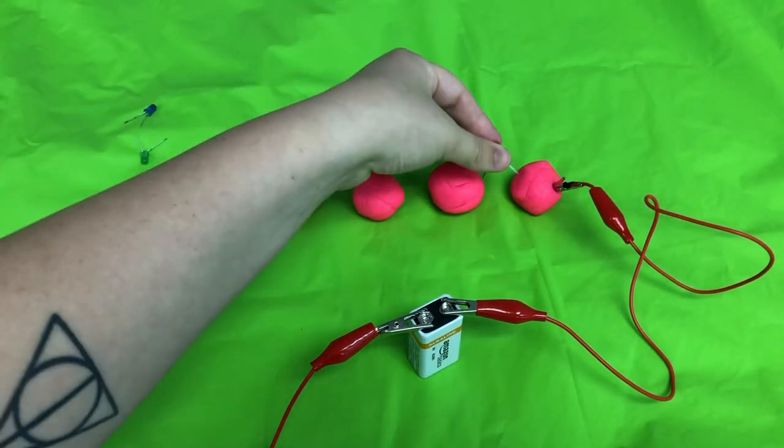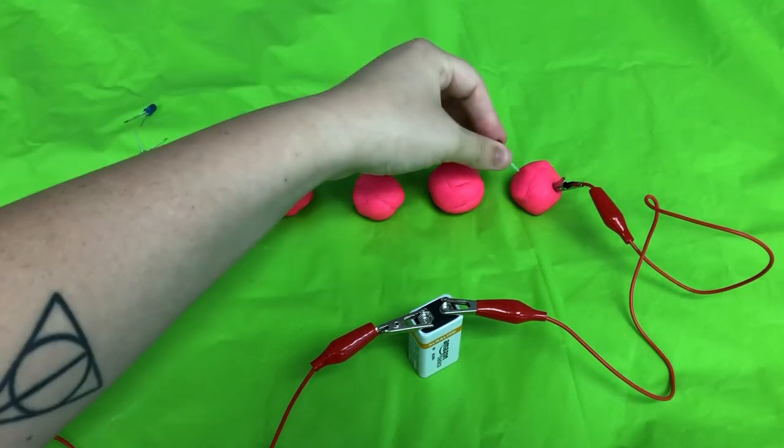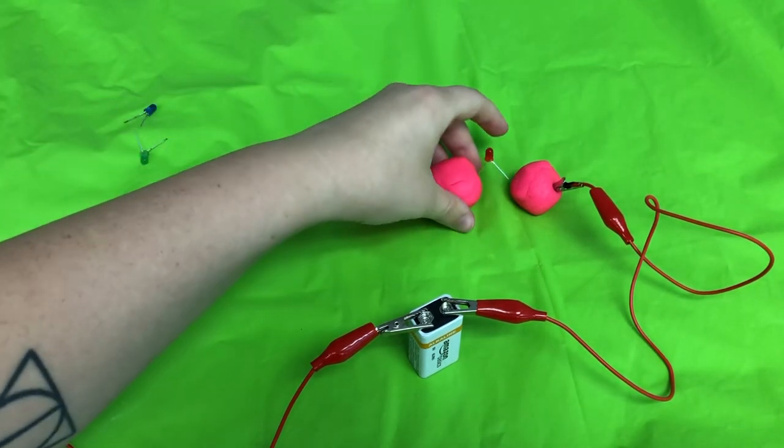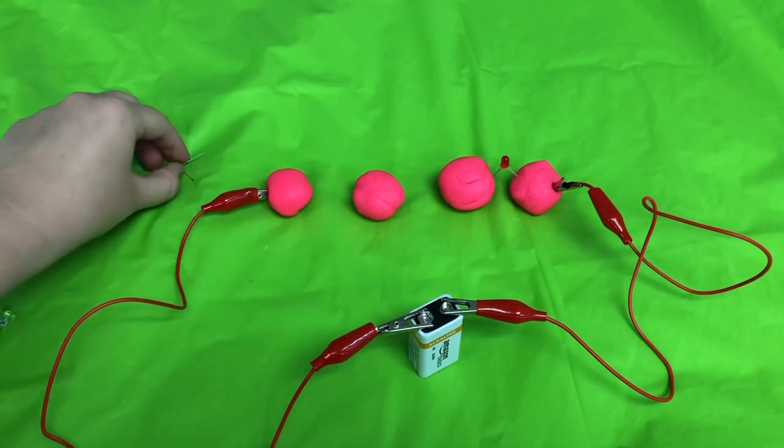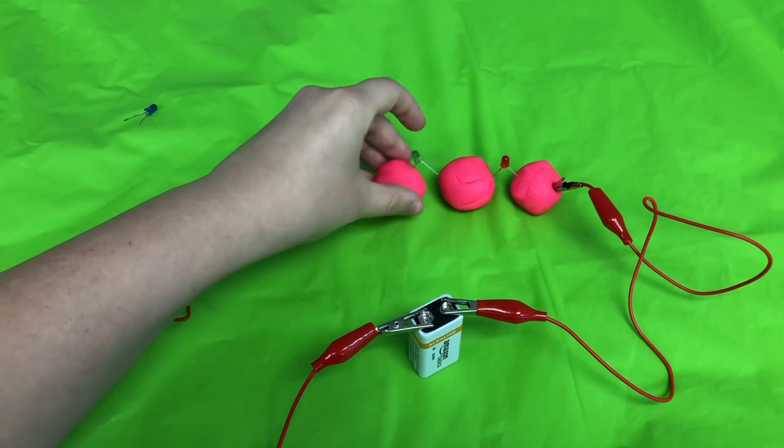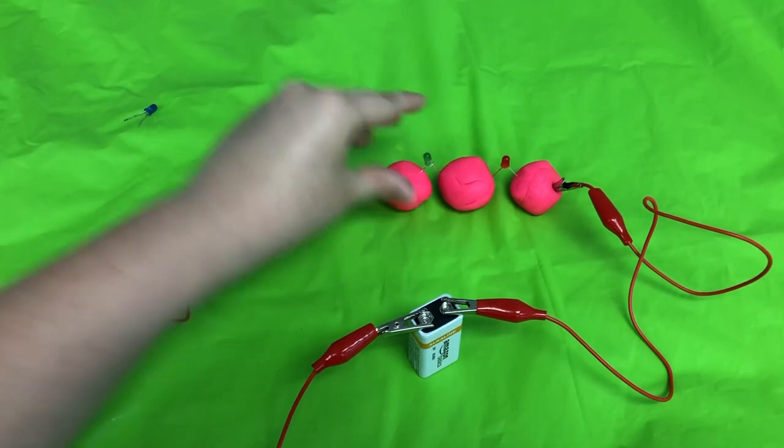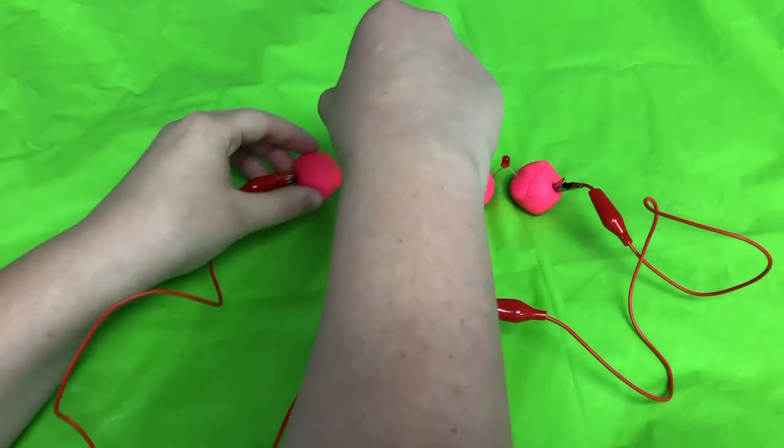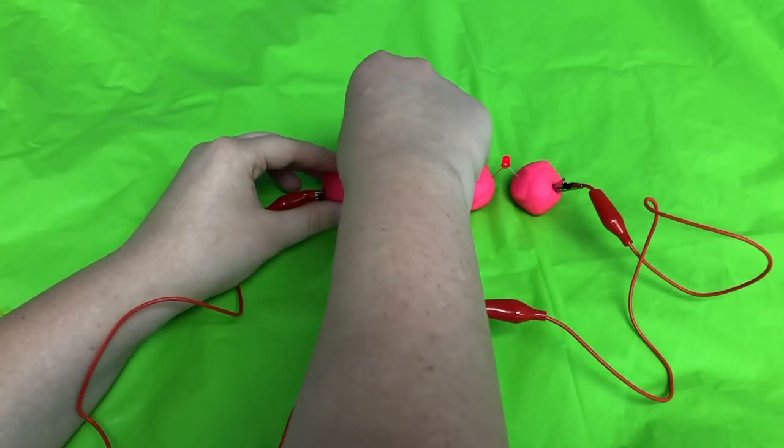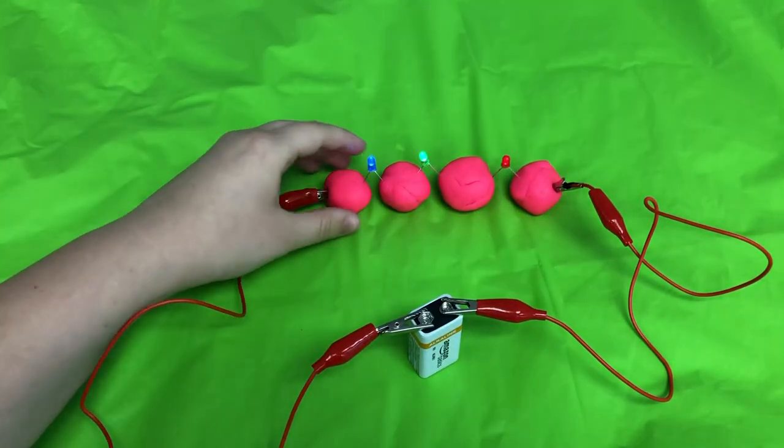So now I'm going to go ahead, remember positive sides to the positive alligator clip, and we are going to do it just like that. So it might take a little bit of trial and error just to get the LEDs all set up right, but eventually once you get it all working, you will have a circuit.